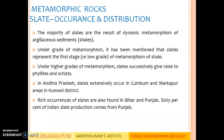Occurrence and distribution of slate: The majority of slates are the result of dynamic metamorphism of argillaceous sediments — shale. It has been mentioned that slates represent the first stage of metamorphism of shale. Under high grades of metamorphism, slates successively give rise to phyllites and schists. In Andhra Pradesh, slates extensively occur in Kambam, Markapur areas in Kurnool district. Rich occurrences of slates are also found in Bihar and Punjab. 60% of Indian slate production comes from Punjab.